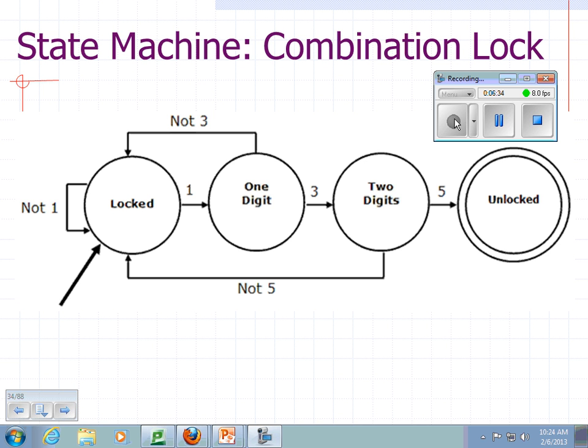If you're in the initial state, the locked state, and you do not enter a one, you stay in a locked state. If you get a one, you move to the one-digit state. If the next digit that you enter is not a three, you go back to the locked state, et cetera. So, this is a state machine modeling a combination lock.